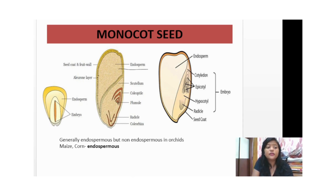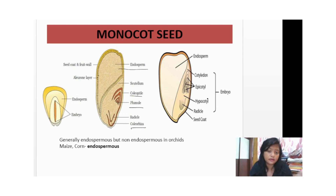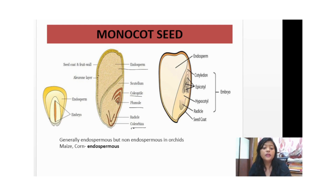Looking at the lower part of the monocot seed diagram, you can see the scutellum — this is basically the cotyledon, another name for cotyledon in monocots. Then there are the coleoptile and coleorhiza, which are protective sheaths: the coleoptile covers the plumule (shoot) and the coleorhiza covers the radicle (root). The epicotyl forms the shoot part and the hypocotyl forms the root part. Monocot seeds are generally endospermous.